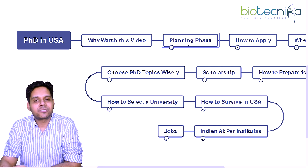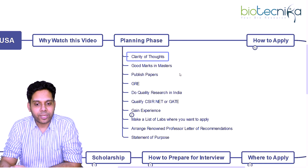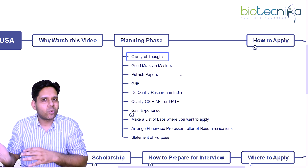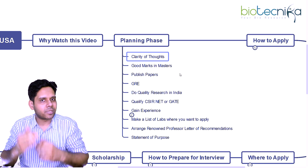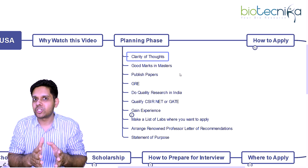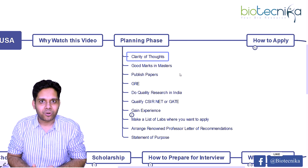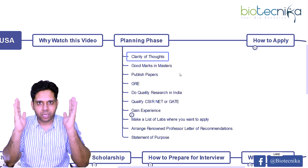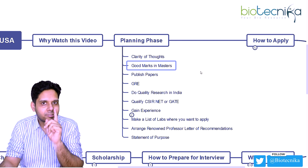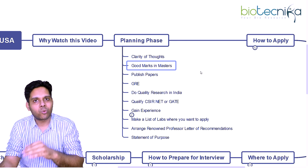As you can see, first we'll start with the planning phase. What are we looking at in the planning phase? The first point is you need to have clarity of thoughts — you need to know why you want to go, why can't you just stay in India, what are the pitfalls, the challenges, your expectations, your parents' expectations, and your career aspirations. Think clearly.